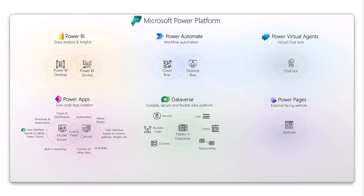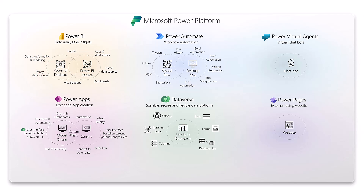Power BI comes in two flavors. Power BI Desktop is more robust — you can connect to many data sources, do data transformation and data modeling, and build reports and visualizations. Power BI Service consumes reports built in Power BI Desktop. You can also build some reports and visualizations in Power BI Service, but there is less data transformation capability and fewer connectors. Dashboards, for example, are created in Power BI Service. Power BI Service is where you consume, share, and tweak your reports, while Power BI Desktop is really where you model and connect your data.